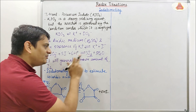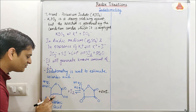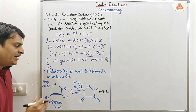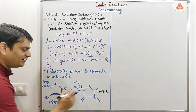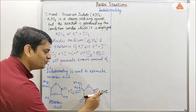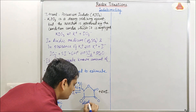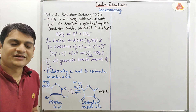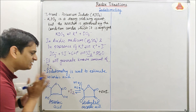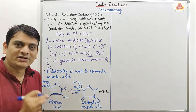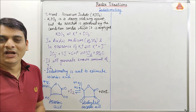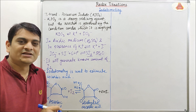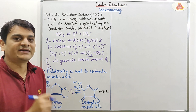The liberated I2 is titrated against ascorbic acid — we take ascorbic acid in the burette — and at the end point we get dehydroascorbic acid plus 2HI. However, in direct titration the reaction is slow and we will not get the exact end point, meaning there is a possibility of errors. To overcome those errors we go for the back titration method.